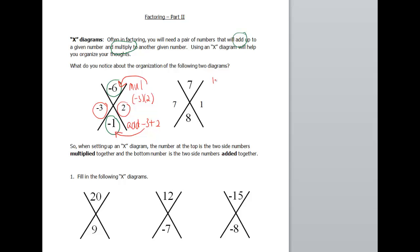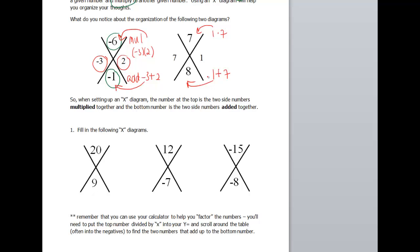So let's check this one. So 1 times 7 gives us 7, and 1 plus 7 gives us 8. Okay, so that works. All right, now comes the fun part.